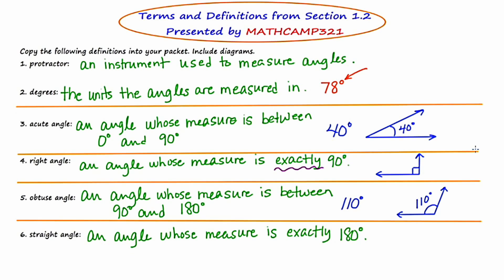Our last example is going to be that of a straight angle. Remember, a straight angle is an angle whose measure is exactly 180 degrees. When all is said and done, a straight angle actually looks like a straight line. For this last example, we would say that angle ABC is a straight angle because its measure is 180 degrees.